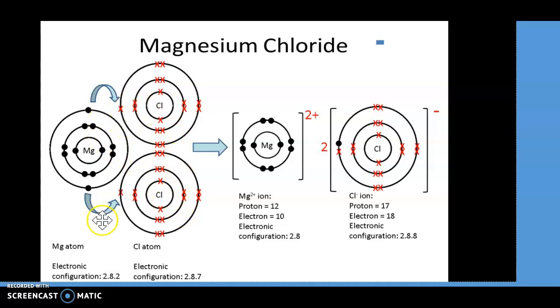Because magnesium needs to lose two electrons, you're going to need two chlorine elements to gain an electron each.